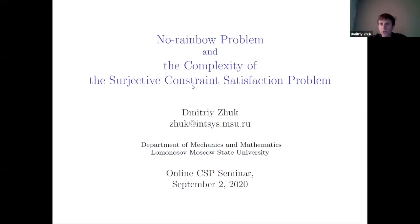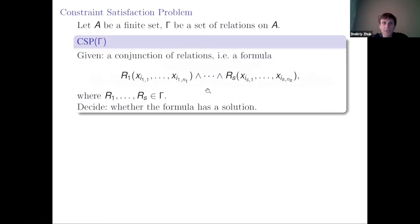Today I will tell you about the no rainbow problem and the complexity of the surjective constraint satisfaction problem. I will start with the definition of the CSP, which you probably know because this is a CSP seminar, but I will repeat.